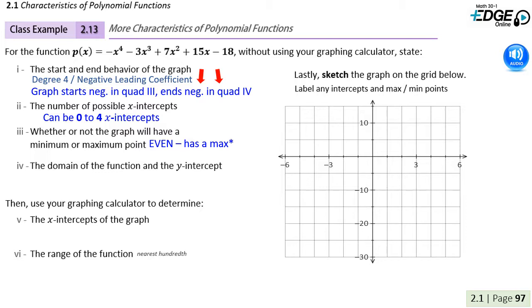Because we are an even degree polynomial, we will have a max or min point. The reason we have a maximum point here is because our graph opens down. That means that we will go down as far as negative infinity, but we will somewhere have an absolute maximum.